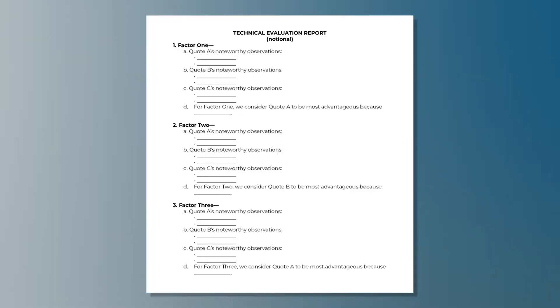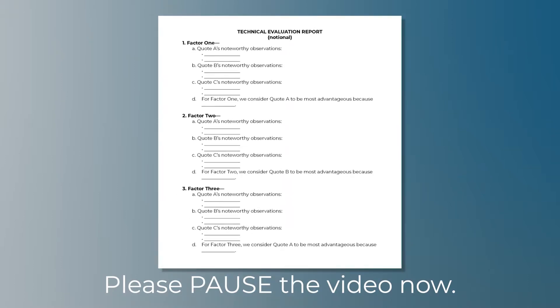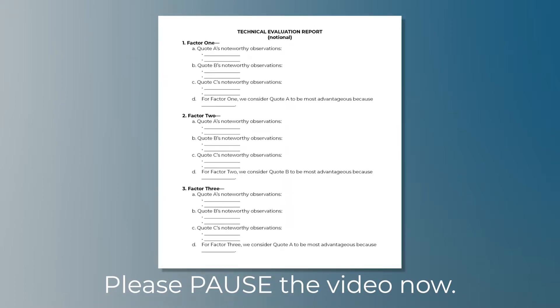To walk through one way to approach this technique, let's look at a notional technical evaluation report template. For this sample, you can see that we have three non-price evaluation factors numbered one, two, and three, and we have three quoters: A, B, and C. You may press pause if you want to look at this template more closely.